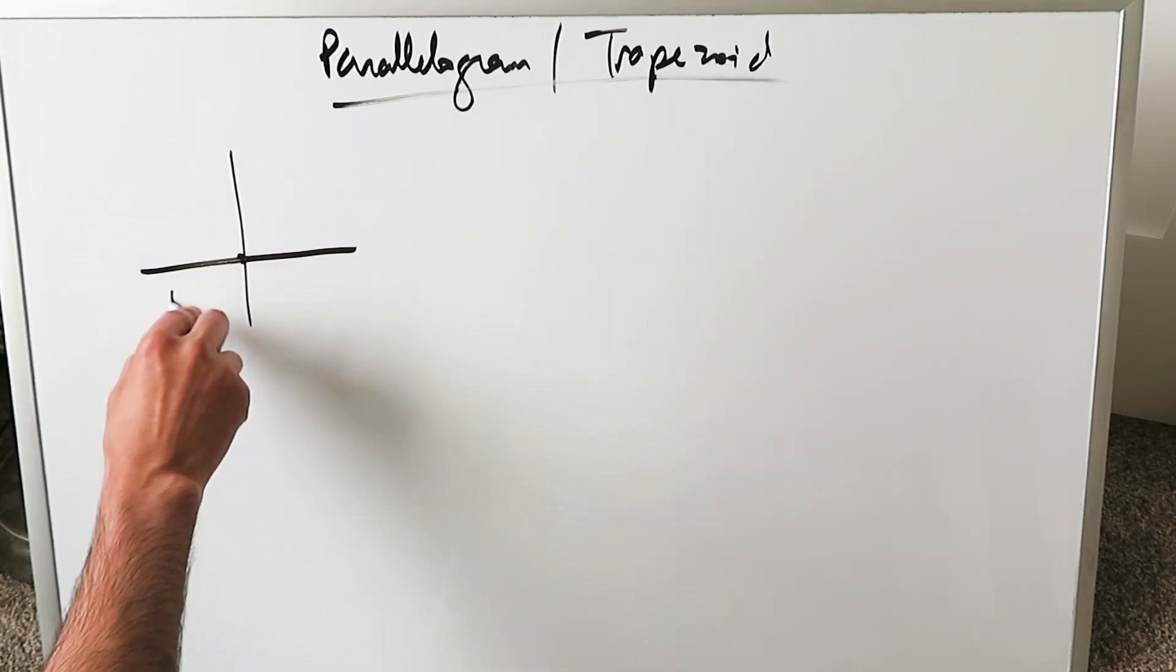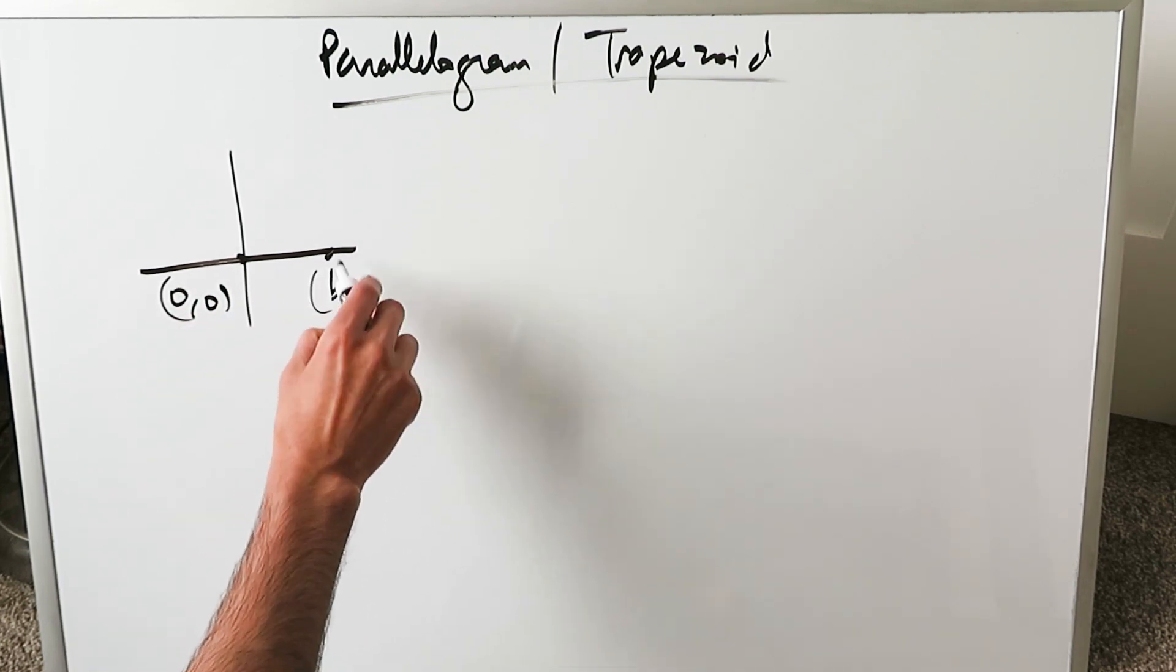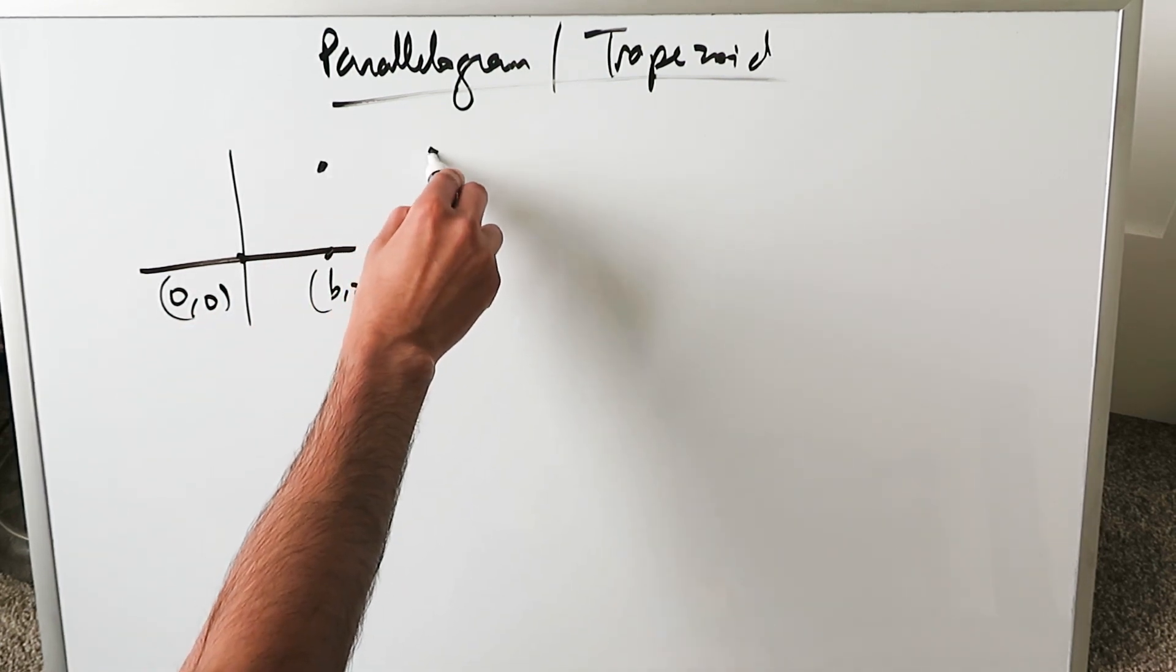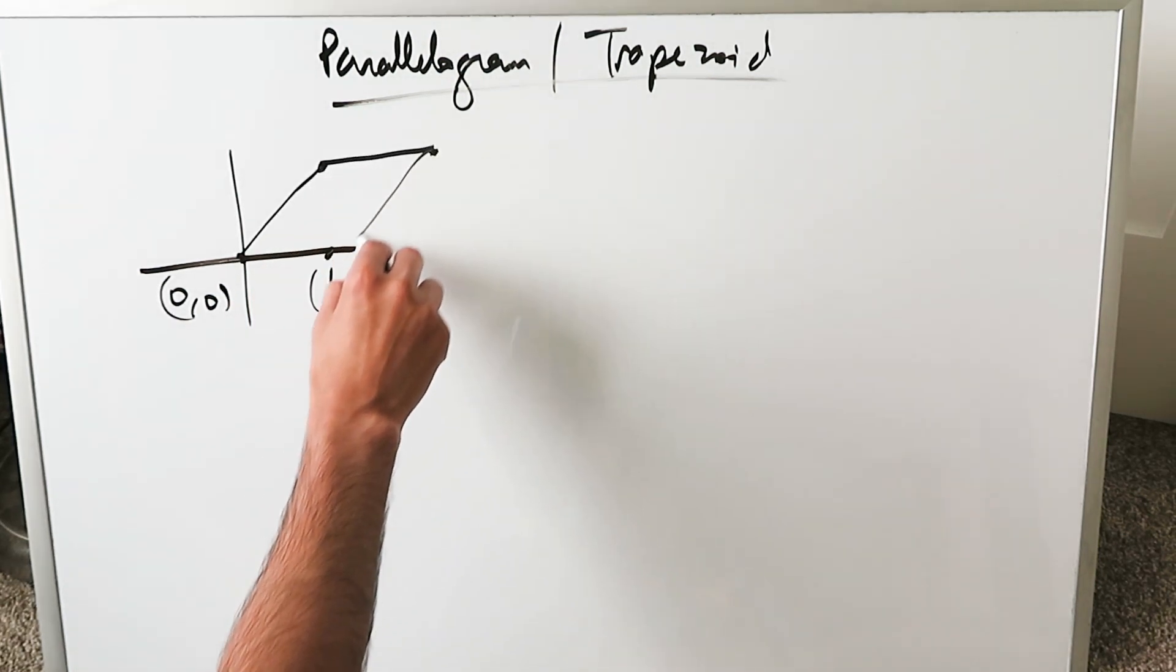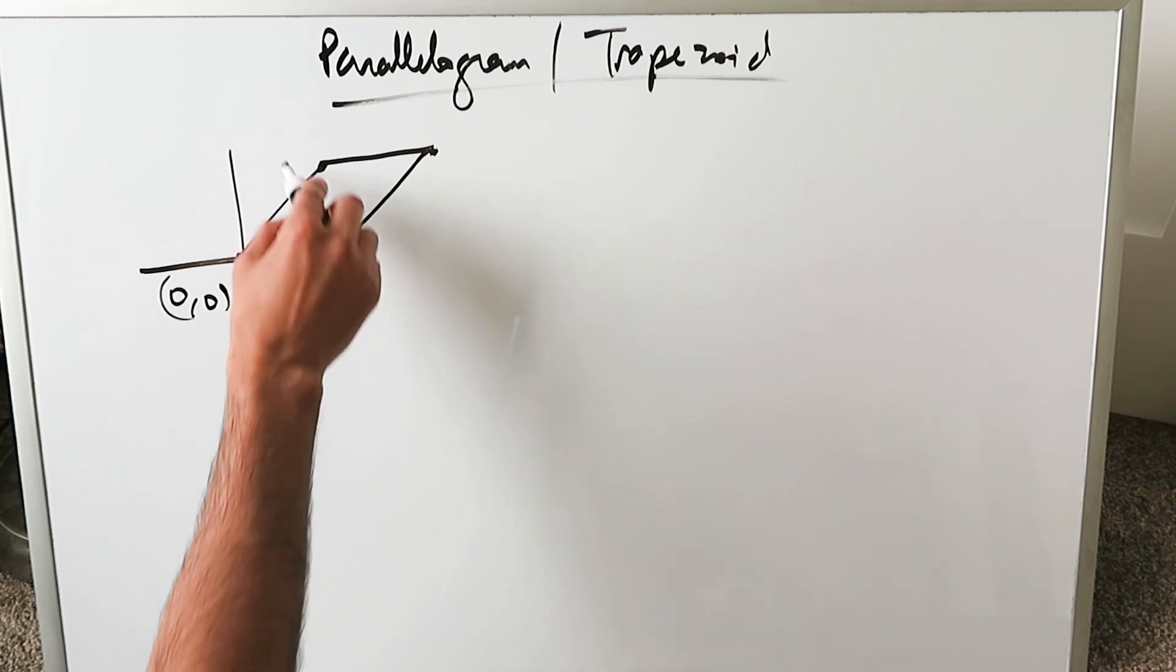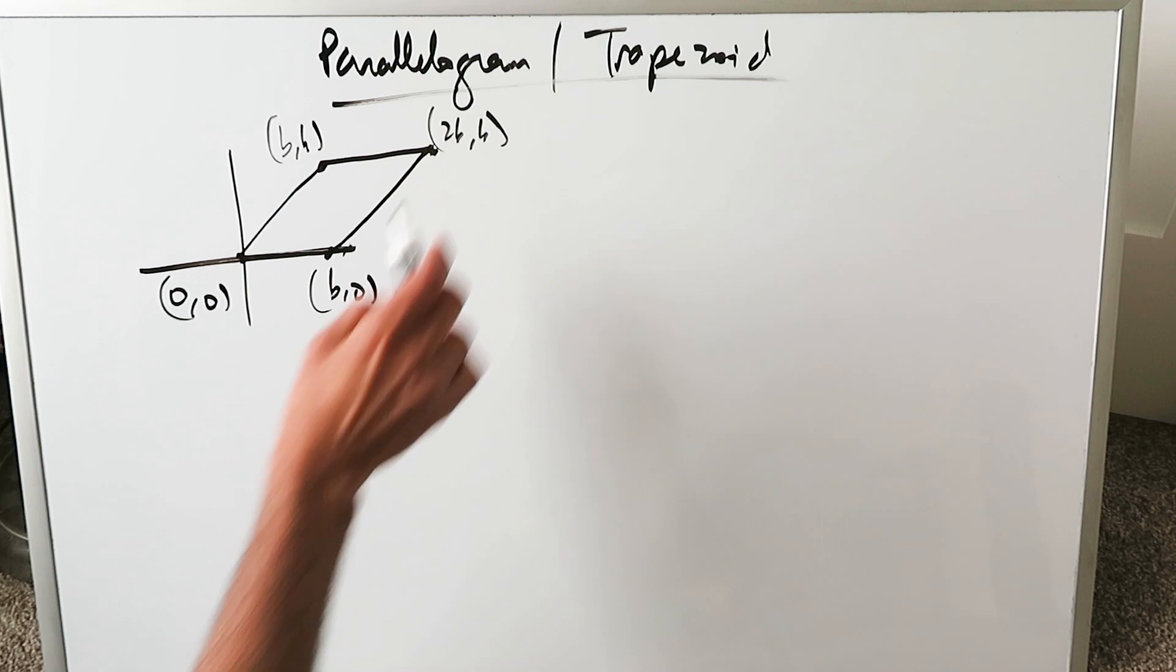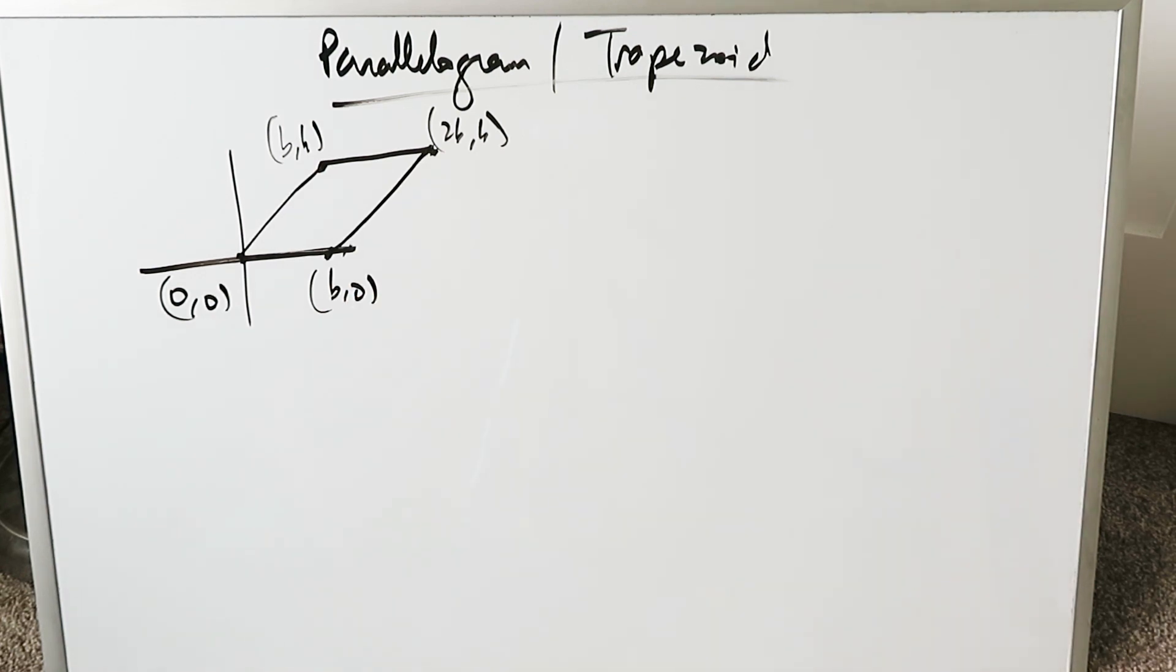If you designate a point here at (0,0) and look across to (b,0), generate a point up here and a point across. You can generate all of these in terms of a parallelogram. This point is (b,0), we can designate this (b,h), and this is (2b,h). So we have everything in a rather symmetrical manner.